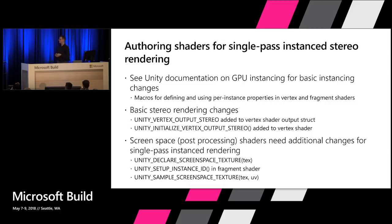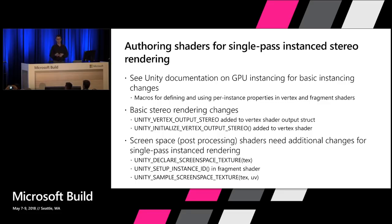If you have custom shaders and you're looking to take advantage of single pass instance rendering, there are a couple of changes you'll need to make. The simplest is to turn on instancing for your materials in Unity. Then we have macros you'd want to use in your shaders to help support single pass instance rendering. Your vertex shader will need an additional output parameter specifying which index of the texture array is being used — macros will do that for you. If you have any screen-space or post-processing shaders, they'll also need special handling, because you can't simply assume that the UV coordinates you'd normally deal with are correct when doing stereo instance rendering.